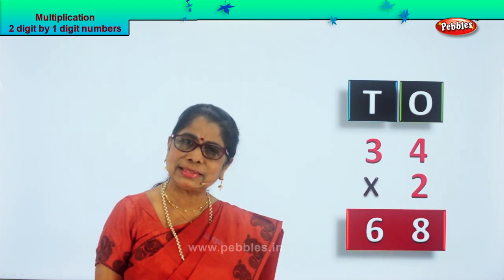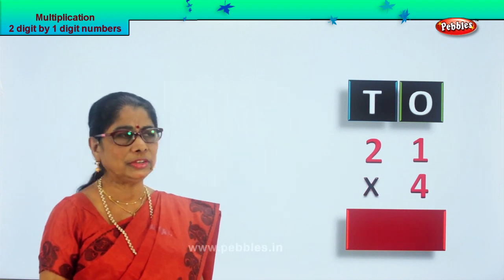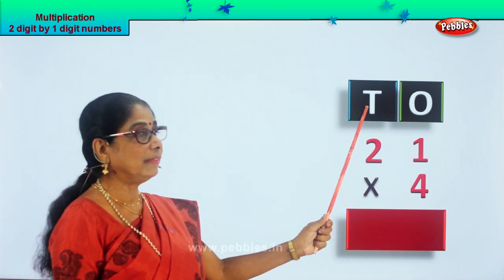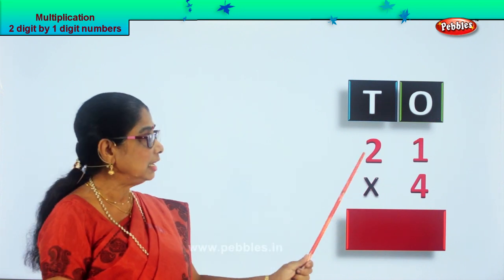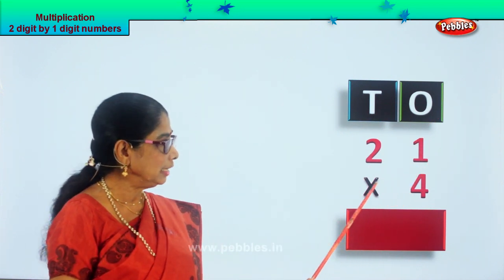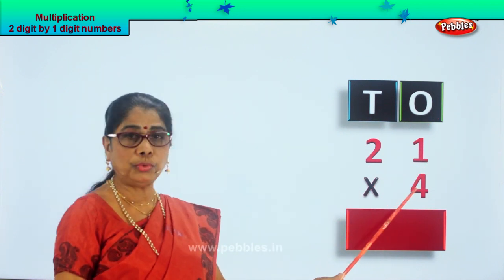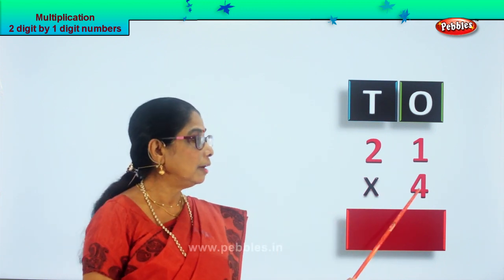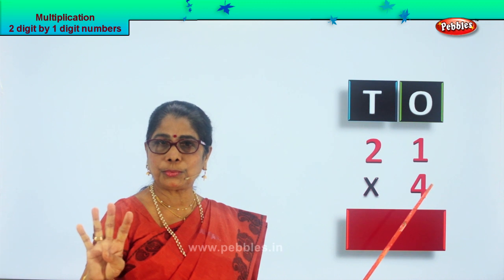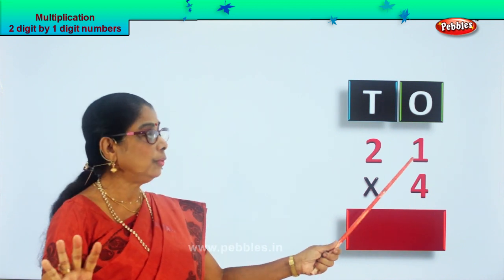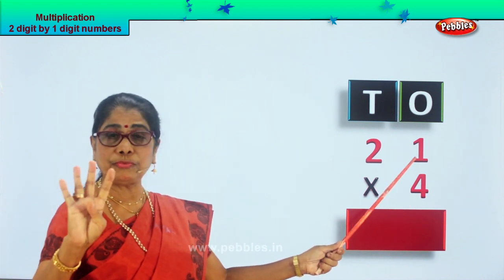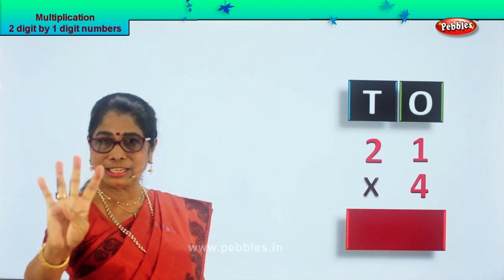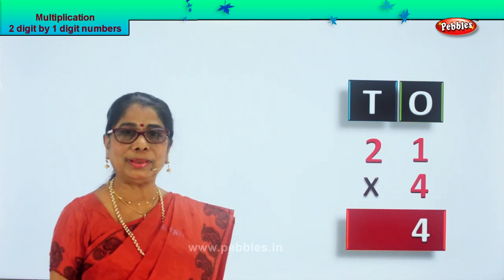Shall we take another sum? Look what's given to you. Here you have arranged the numbers: ones, tens — twenty-one multiplied by four. Twenty-one, four. Four into one — four one time. What is four ones are? Just four. So we write four here.